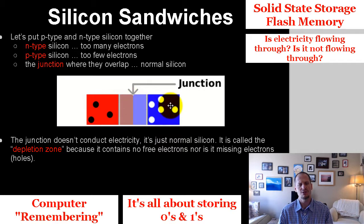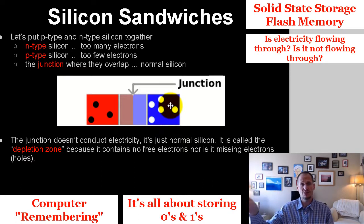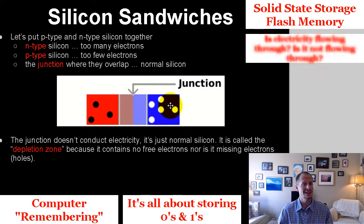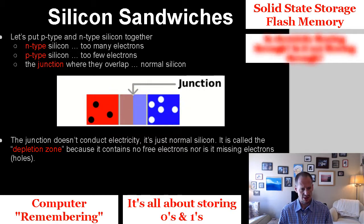The question becomes: is there a way to get these electrons to flow from one side to the other — to leap over that wall? If electrons are flowing from one side to the other, we have electricity, because electricity is the flow of electrons. Right now there's a barrier with no flow, but can we get these electrons to start flowing?